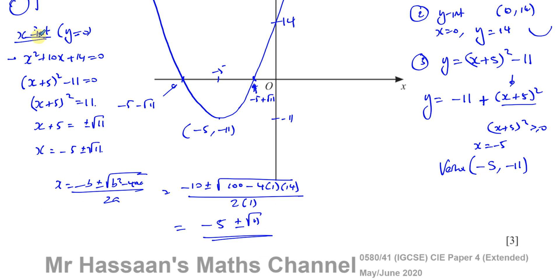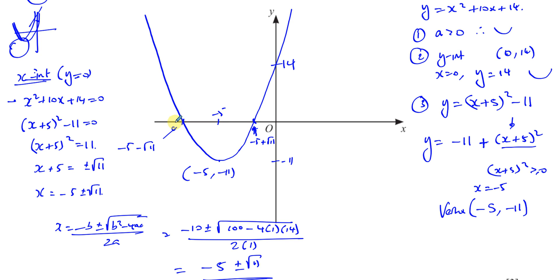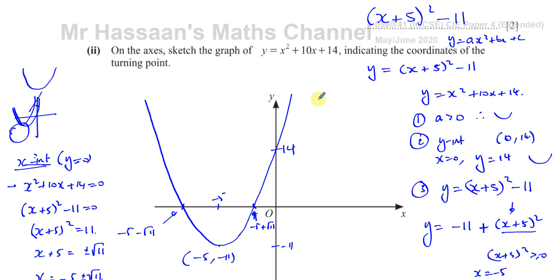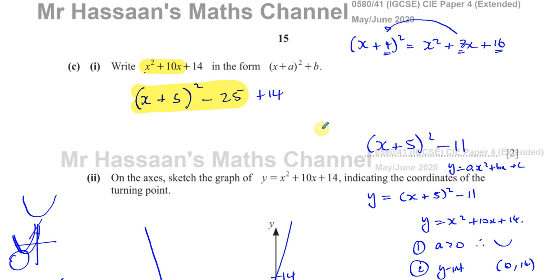We used completing the square first because the question already required it in part one. None of the x-intercept working is needed for this question — it only asks us to sketch the graph and indicate the turning point. As long as you show the vertex in the correct position and the curve has the right shape, that's sufficient for full marks.